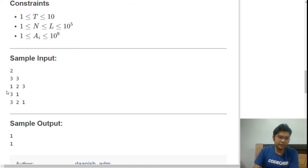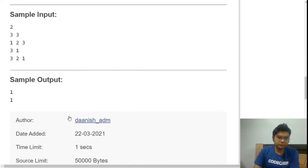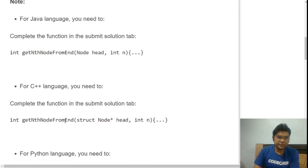Looking at the sample input: if N is 3 and L is 3, we have nodes 1, 2, 3. The third node from the last is 1, so the output is 1. Similarly, with three nodes and N equal to 1, the last node is 1 itself, so the output is 1 again.